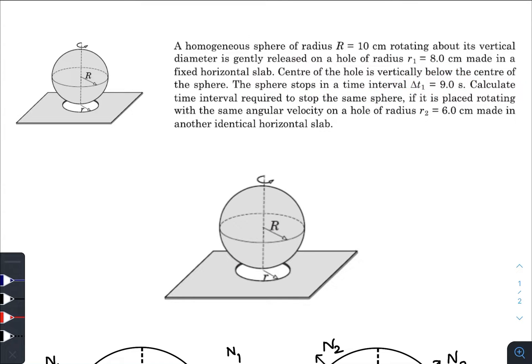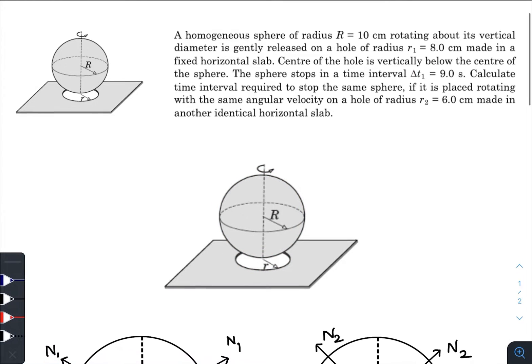The sphere stops in a time interval of Δt1, that is 9 seconds. Now this rotating sphere when placed gently over this fixed slab having a hole of radius r1, it stops after an interval of Δt1. That means of course there is some frictional force that is acting on this, and due to that frictional force there is a frictional torque which is decreasing the angular velocity to zero.